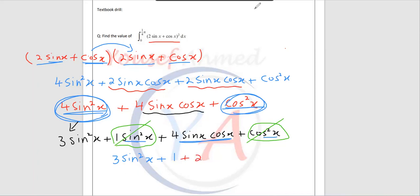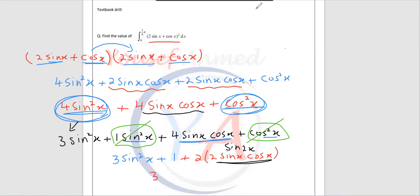Check here this one — can you change this to any identity? Yes. This means 2 multiplied by 2 sin x cos x. So this one is which identity? This is the double angle formula — in case you have sin, 2 sin x cos x is sin 2x. So what you can do now: it will be 3 sin square x plus 2 sin 2x, and then plus 1. Here I have 4 sin x cos x — it becomes 2 by 2 sin x cos x, and then 2 sin x cos x is the double angle formula, so it will be 2 sin 2x.